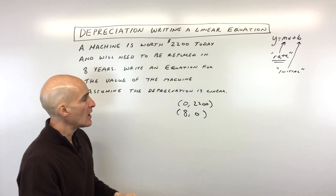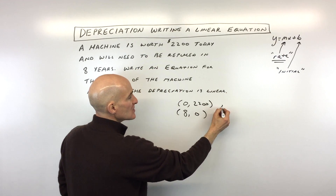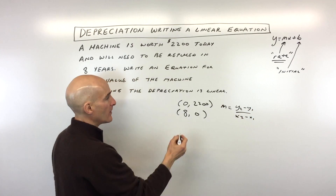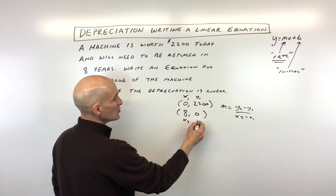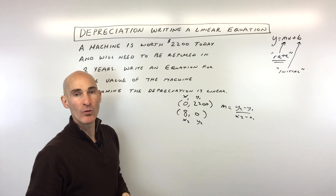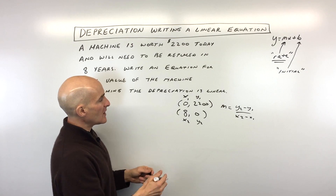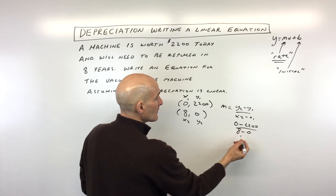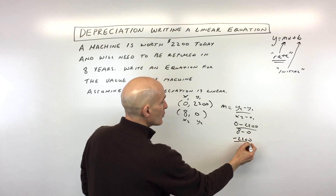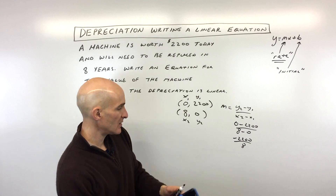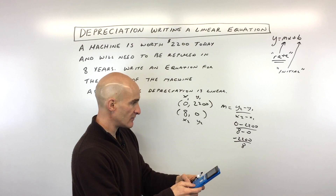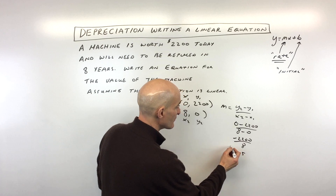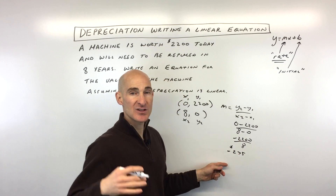Now we've written the two coordinates. To find the rate or slope, we use the slope formula: y2 minus y1 over x2 minus x1. So (0, 2200) is (x1, y1) and (8, 0) is (x2, y2). So we calculate 0 minus 2,200 over 8 minus 0, which gives us negative 2,200 over 8. Using a calculator: negative 2,200 divided by 8 equals negative 275. That means the value is going down at $275 per year — the negative just means it's decreasing.